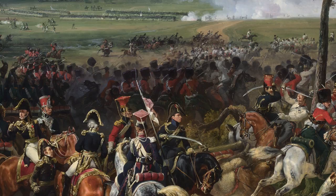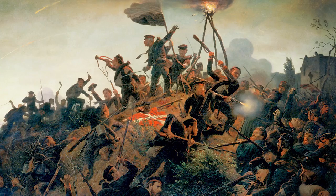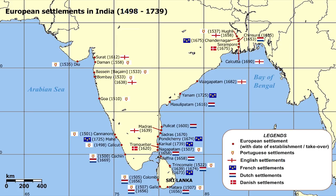In 1864, Prussia and Austria went to war over the duchies of Schleswig and Holstein, ending in a humiliating defeat for the Danes and the loss of a large amount of land. After this loss, the Danish colonial possessions around the world were sold off to various powers. The defeat also heavily shaped the change in Danish politics.